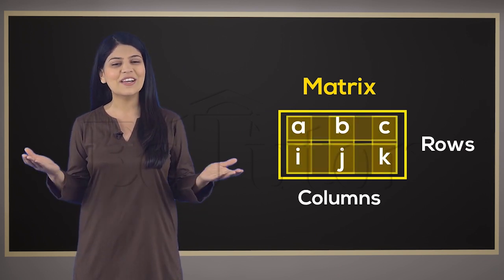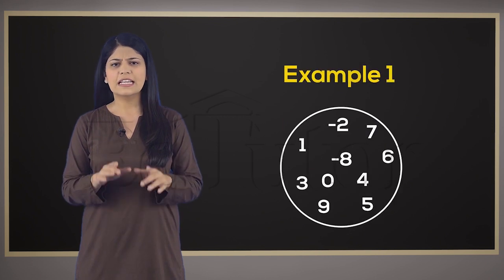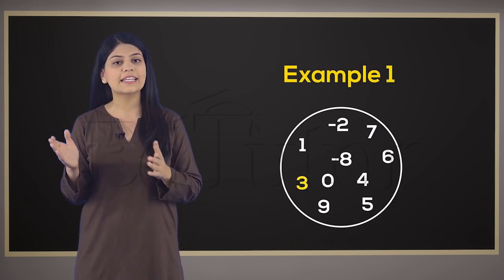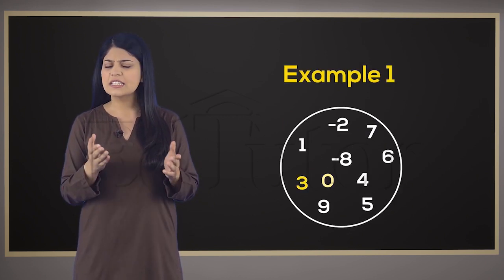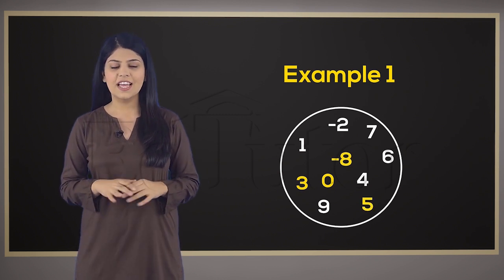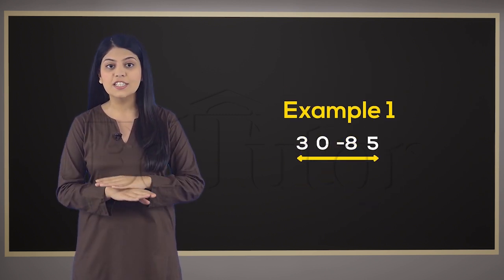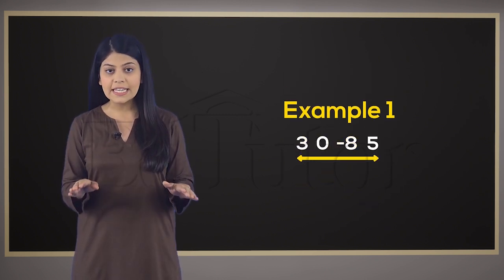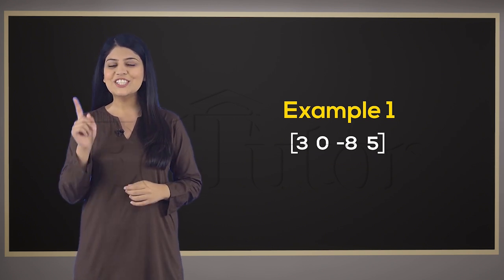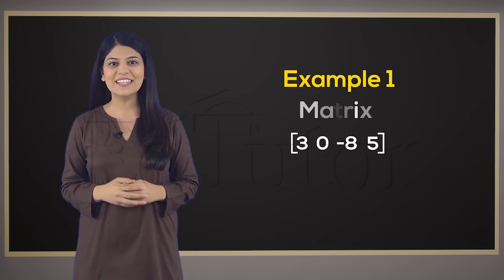You'll see how in just a bit. First, let's take some random numbers like 3, 0, negative 8, and 5. Now, place these numbers horizontally and draw brackets around them. You just have made yourself your first matrix.